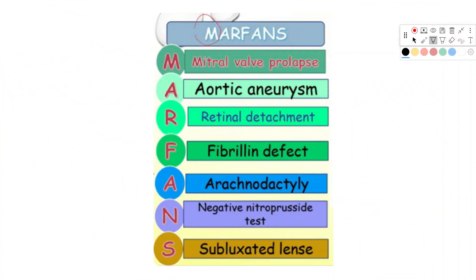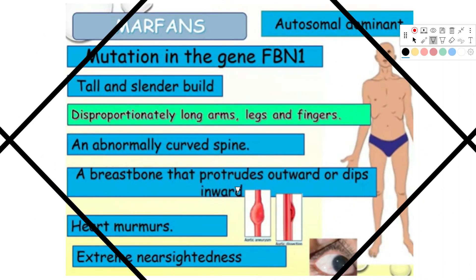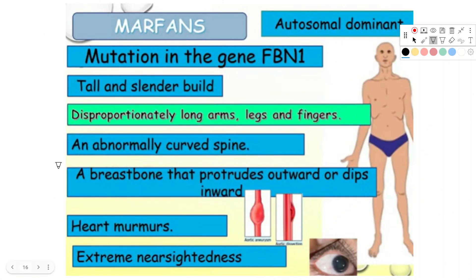Here is a simple mnemonic to remember Marfan syndrome for exam purposes, starting with the word MARFAN itself: M — mitral valve prolapse, A — aortic aneurysm, R — retinal detachment, F — fibrillin defect, A — arachnodactyly and negative nitroprusside test, N — subluxated lens.